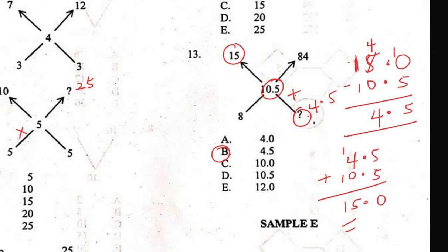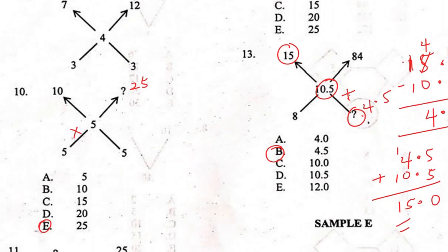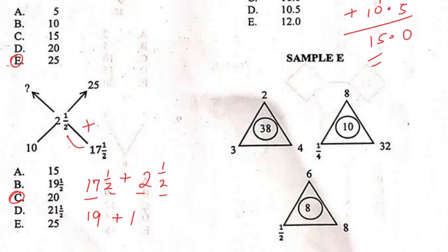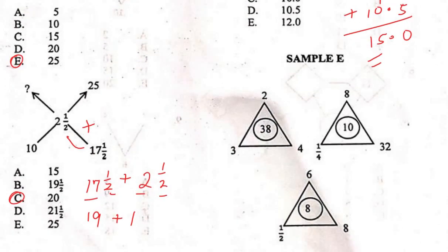Thank you very much. This is how much we can cover for today's lesson. In the next lesson on quantitative reasoning — there are 40 questions total — I'll break them into three parts. In lesson two, I'll start from Sample E and take as many samples as I can, and eventually complete it so we can move to the other aspect, which is vocational aptitude. Thanks, bye.